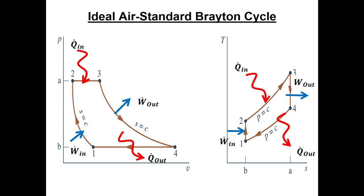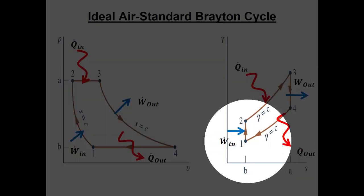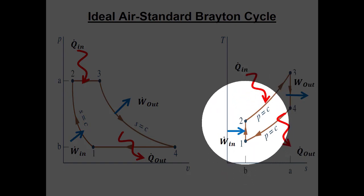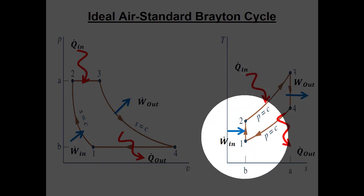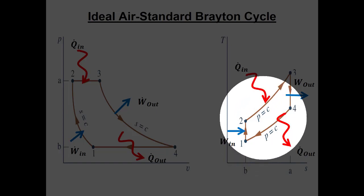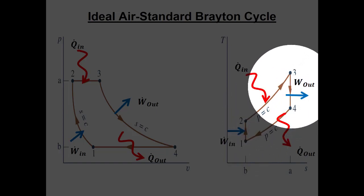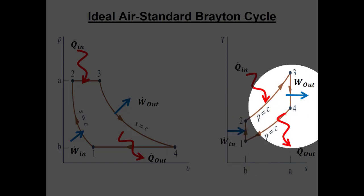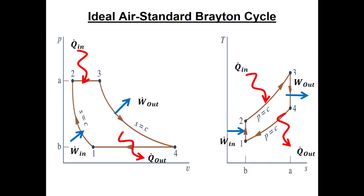Unlike internal combustion engines, in Brayton cycles we start with the isentropic process but we could use something like the isentropic efficiency of a compressor or turbine, and we would move away from these vertical lines to lines that move to the right because in those cases specific entropy is increasing.